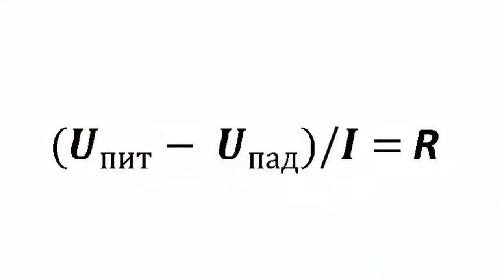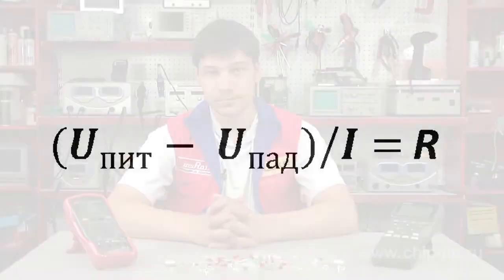The limiting resistor is calculated according to a regular scheme: power supply voltage minus LED voltage, divided by the operating current value. Don't forget about resistor power — we've spoken about that in one of our previous videos.